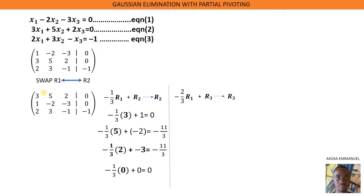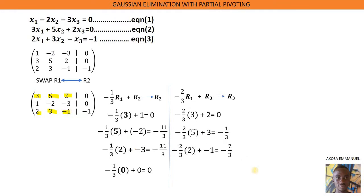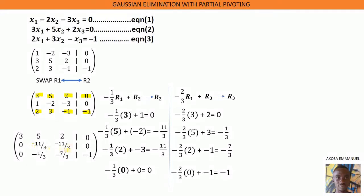For row 3: we pick 3 and 2. Negative 2 over 3 times row 1, which is 3, plus row 3, which is 2, gives us 0. Then we pick 5 and 3, giving us negative 1 over 3. Then we pick 2 and negative 1, giving us negative 7 over 3. So the matrix after reducing the first column is this one here.